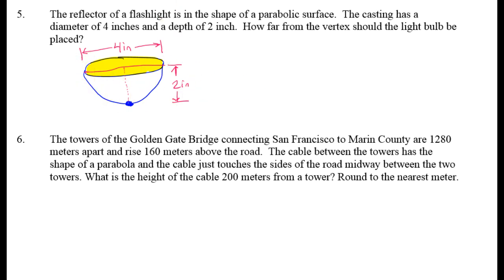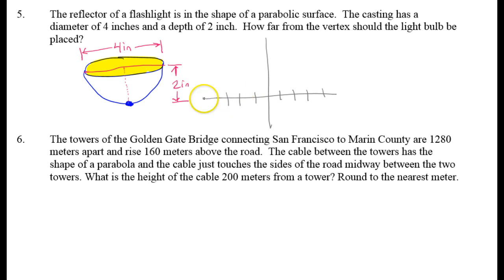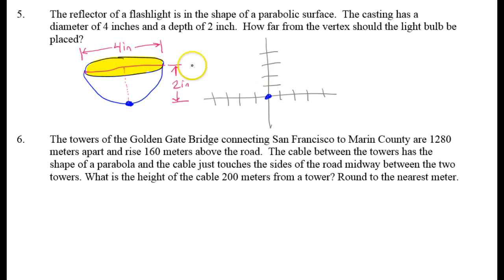So let's take this parabola and put it on a coordinate plane. Let's put the vertex at (0, 0) — that'll make our lives easier. Let each mark represent 1 inch. So what we have is a parabola where if I go up to a height of 2, then I would have to go 2 to the right and 2 to the left to form the parabola, because it has to be 4 inches across at this depth.